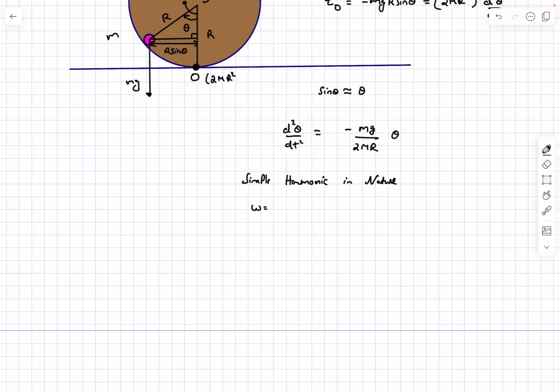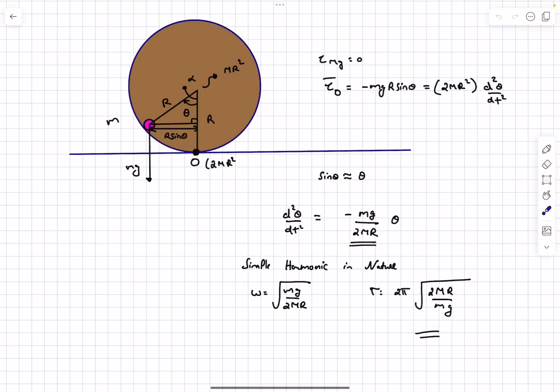The angular frequency of oscillations is simply the square root of the coefficient of this term. That is square root of mg divided by 2Mr, and time period of oscillations is going to be 2 pi square root of 2Mr upon mg. So this would be the answer to the problem.